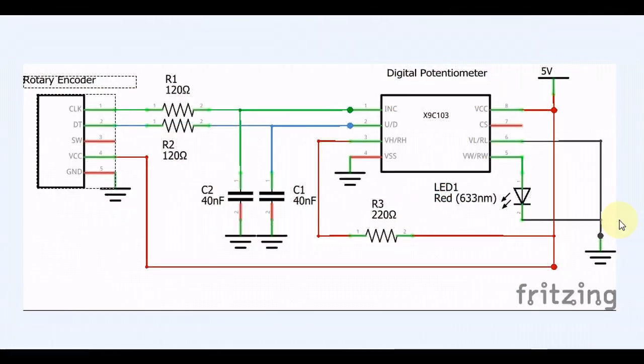Alright, I've got the schematic brought up here. So what we've got here, our two main components is the digital potentiometer right here, the X9C103 or similar, and then we have our rotary encoder. Now I'm using one of those rotary encoders that you can get that are on the board.